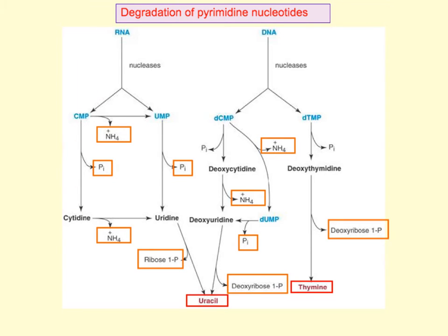CMP and DCMP are first converted into either uridine, which is converted to uracil, or deoxyuridine, which is also converted to uracil. In DNA synthesis specifically, uracil is transformed into TTP, but in breaking down, cytidine is converted to uracil. So building up you go from uracil to thymine; breaking down, you go from cytidine to uracil.